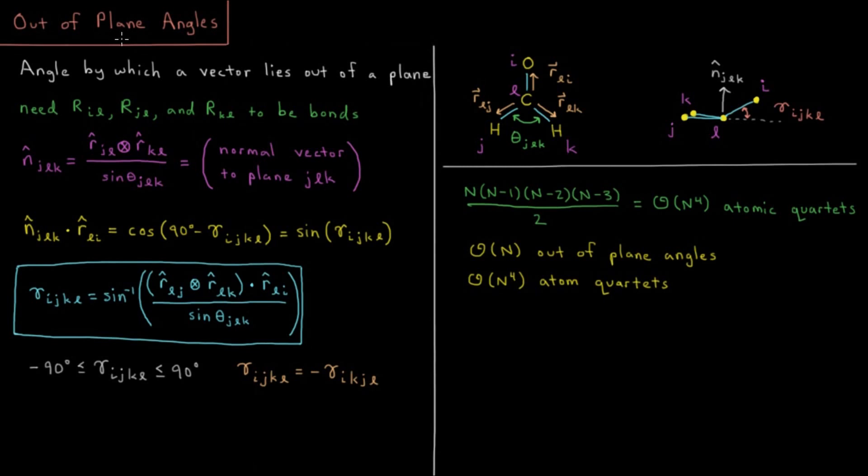Thus far we talked about bonds, angles, and torsions and showed how to build Z matrices out of those type of coordinates. Out-of-plane angles aren't essential for describing the geometry of molecules, but sometimes they're used in describing the types of energy functions we're going to see in the next chapter in molecular mechanics, so we're bringing them up just to have our bases covered.